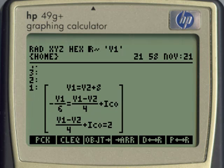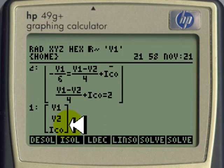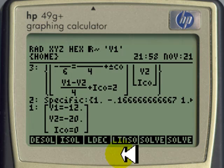We turn them into an array, request a solution for V1, V2 and Ic0 with a linear solver, and learn that the current in the capacitor is zero amps, and that the voltage V2 is negative 20 volts.